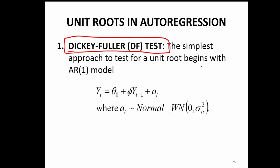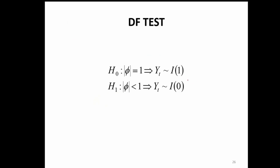The simplest approach is to have an AR(1) series: yt with theta naught and phi times yt-1, and we would like to know if phi is 1 or not. In this AR(1) series, we expect phi to be less than 1. If it is equal to 1, then that is a problem — that is a random walk series. So, the hypothesis testing in the case of the Dickey-Fuller test is: the null hypothesis is that the modulus of phi equals 1, and the alternative hypothesis is that the modulus of phi is less than 1. Either the null hypothesis gets accepted or we reject it, depending on what the test statistic value is.